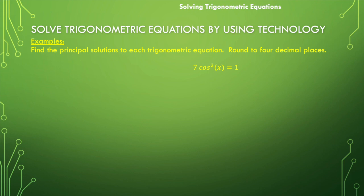So let's first divide out the 7, and we would end up with cosine squared of x is equal to 1/7. Then take the square root of both sides of the equation, and we would end up with the cosine of x is equal to plus or minus the square root of 1/7. Take 1/7, and then take the square root of that in your calculator, and you should get an approximation, plus or minus 0.3780.